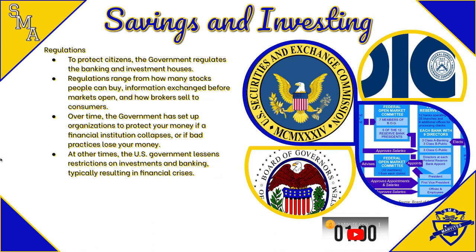Where the government steps in is regulating all of these different industries. For instance, the Securities and Exchange Commission regulates stocks, and the Federal Reserve regulates banks. Other regulatory agencies in the federal government are typically there to protect the consumer, but they can only do what Congress passes. Congress has to pass regulations on specific parts of those industries — covering things like how many stocks a single person can buy, information exchange before markets open, and how brokers sell stocks to consumers.